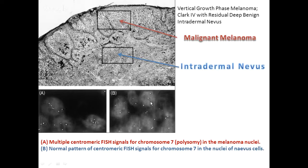In theory — and we don't currently use this routinely — the potential application is to use FISH to increase the accuracy of Breslow thickness measurement: you'd measure down to where the copy number changes stop in those cells. You can compare the H&E with the FISH since it's an in situ test — you can actually see it on the glass slide. It's not grind-and-find like CGH.